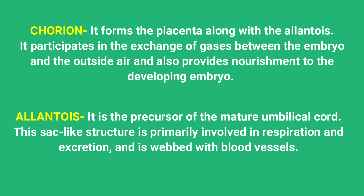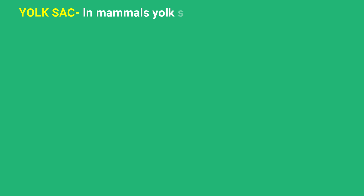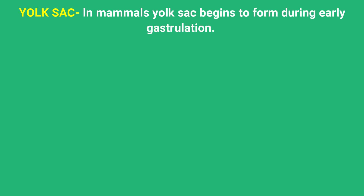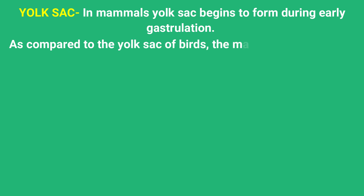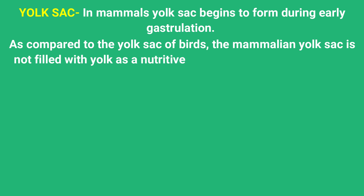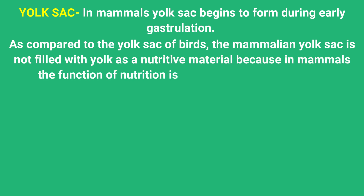The last membrane is the yolk sac. In mammals, the yolk sac begins to form early during gastrulation. Compared to the yolk sac of birds, the mammalian yolk sac is not filled with yolk as a nutritive material, because in mammals the function of nutrition is performed by the placenta. The mammalian yolk sac is much smaller than that of birds, since mammals receive direct food supply from the mother via the placenta. In birds, development occurs outside the body so yolk is present in large amounts.